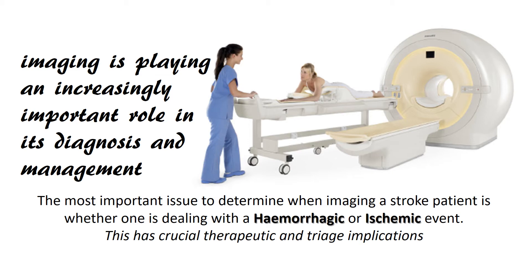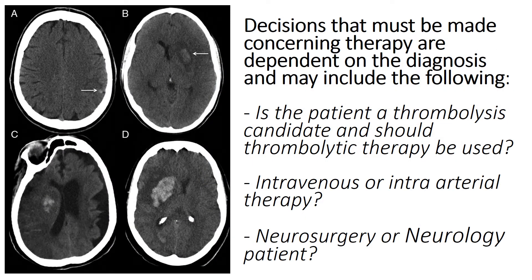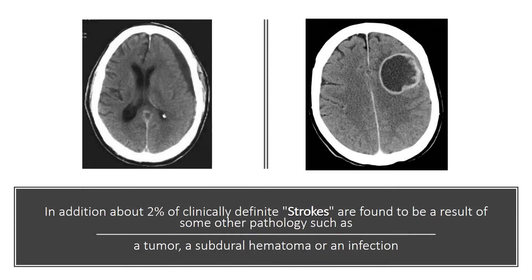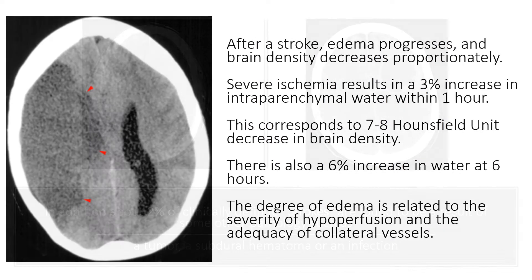This has crucial therapeutic and triage implications. Decisions that must be made concerning therapy include: Is a patient a thrombolysis candidate and should thrombolytic therapy be used? Intravenous or intra-arterial therapy? Neurosurgery or neurology patient? In addition, about 2% of clinically definite strokes are found to be a result of some other pathology such as a tumor, a subdural hematoma, or an infection.